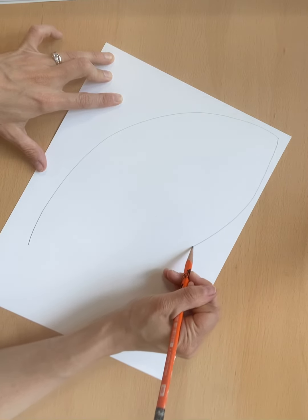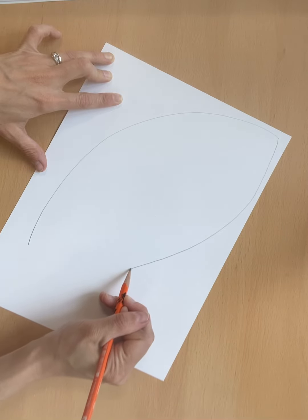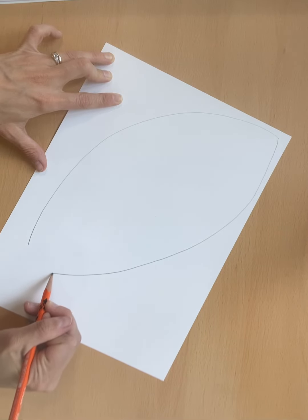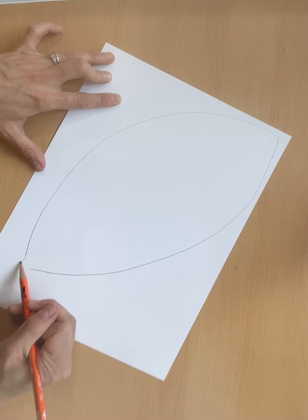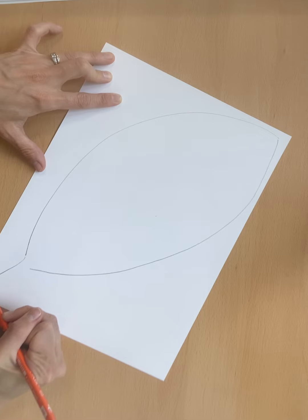Because caterpillars like big fat giant leaves to eat, we're going to go like this, and then we can draw our stem that goes down to the bottom like that.